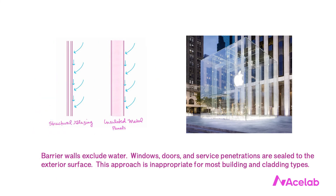The second approach to water management in walls is exclusion. We call these barrier walls or perfect barrier walls. Windows, doors, and service penetrations are sealed to the exterior surface. This is the least common approach and also the most tricky. Structural glazing works this way — like the Apple Store — and insulated metal panel walls often work this way as well. Its application is very narrow; most of the time it's simply not realistic to create a perfect barrier for water and still build the type of building we want out of the materials we want to use.